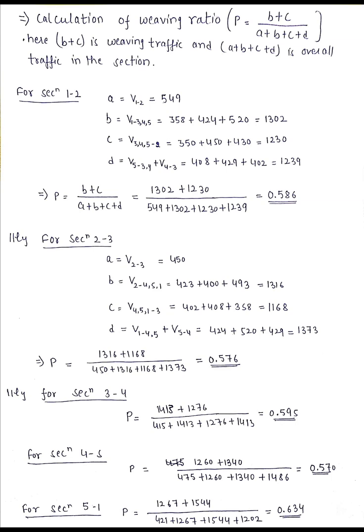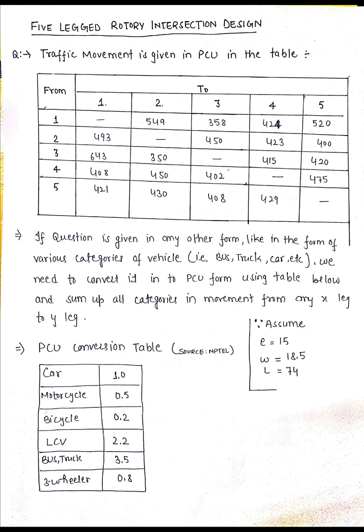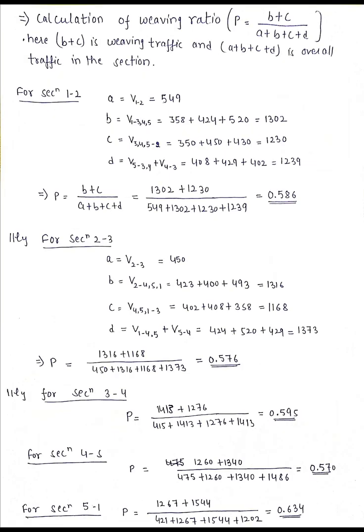Once we know what type of traffic is a, b, c, and d, by using this table in the question—that is, the PCU table—we can calculate the number of vehicles. After calculating a, b, c, and d, we can calculate P, which is the weaving ratio. Similarly, for all other sections.